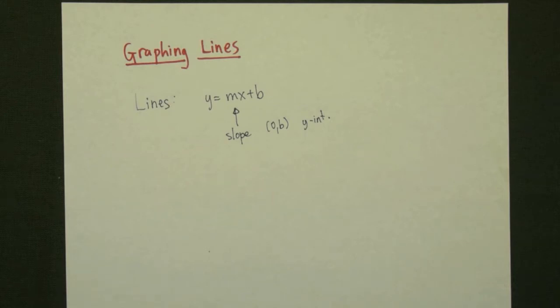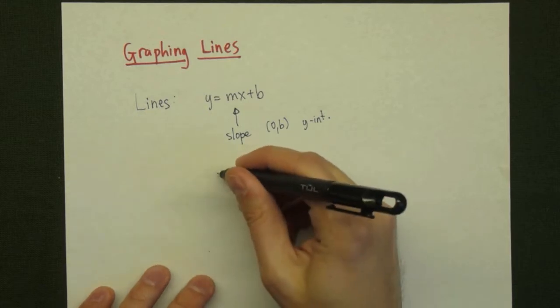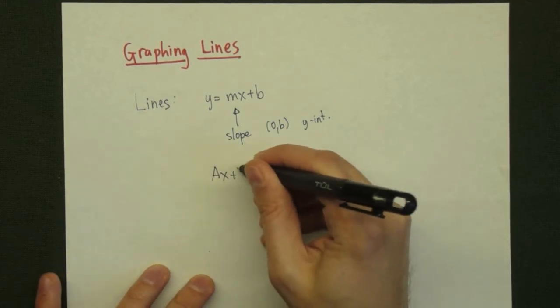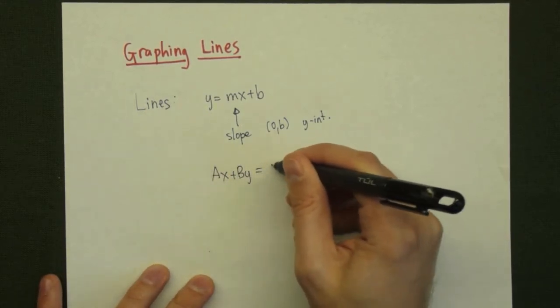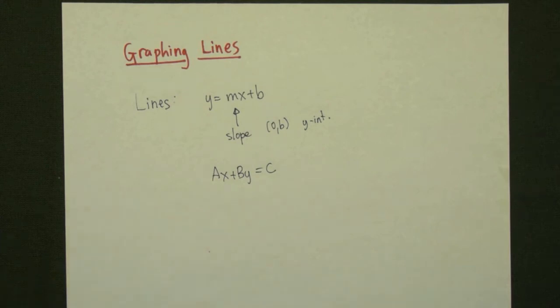The other form that the line can come in is the form where all the variables are on the same side: Ax plus By is equal to C. In order to graph these equations, the method of graphing will depend on which form our line is in.